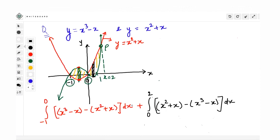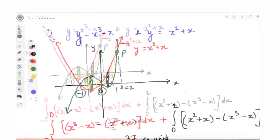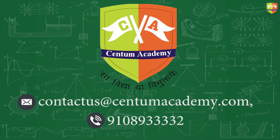Now just take one minute and give me the answer for this. So just check your answer. Your answer should come out to be 37/12 square units.